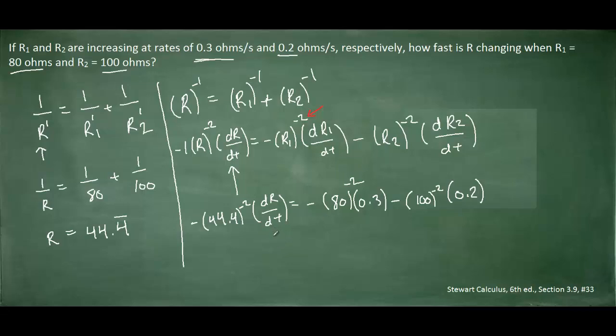So again, we're trying to solve for dr/dt, which represents the rate at which R is changing. So let's go ahead and use some algebra to solve for dr/dt. So after solving for dr/dt, you should obtain 0.132 ohms per second. As always, if any of the algebra presents difficulty for you, let me know and I'd be happy to respond.